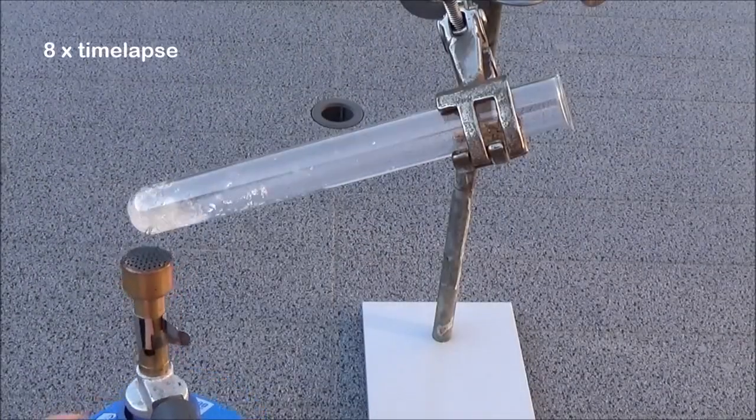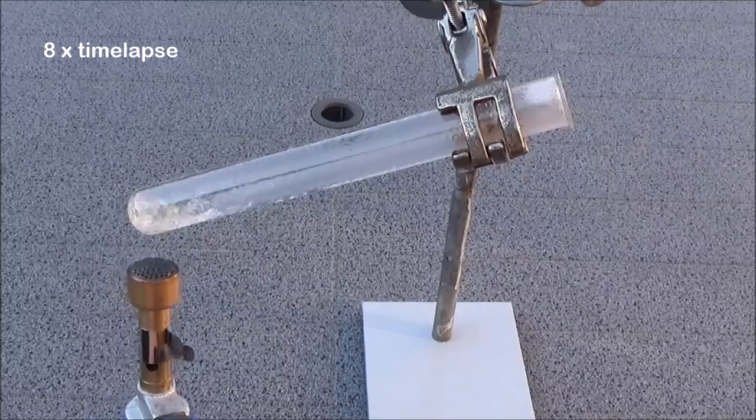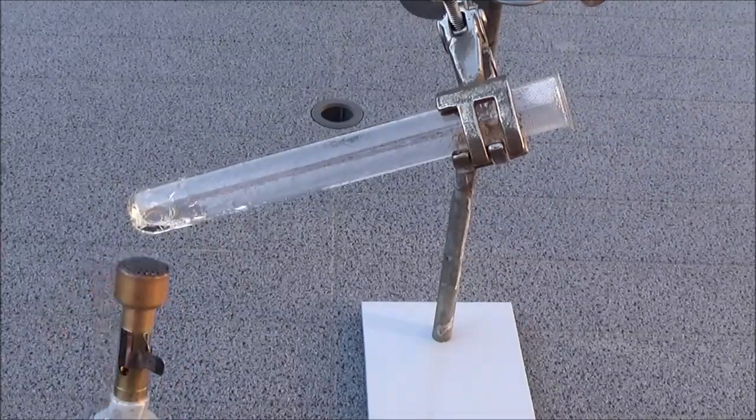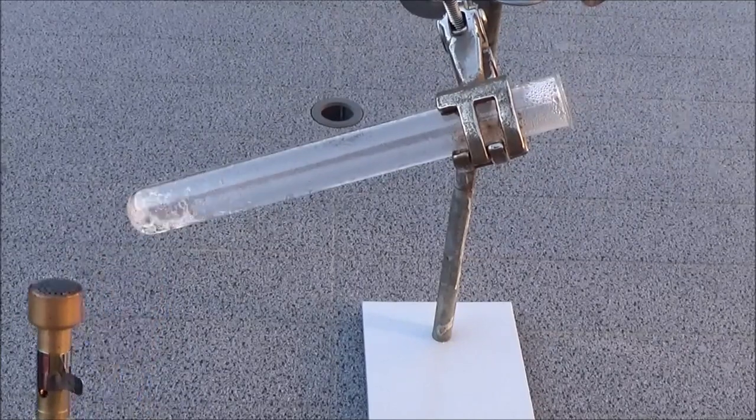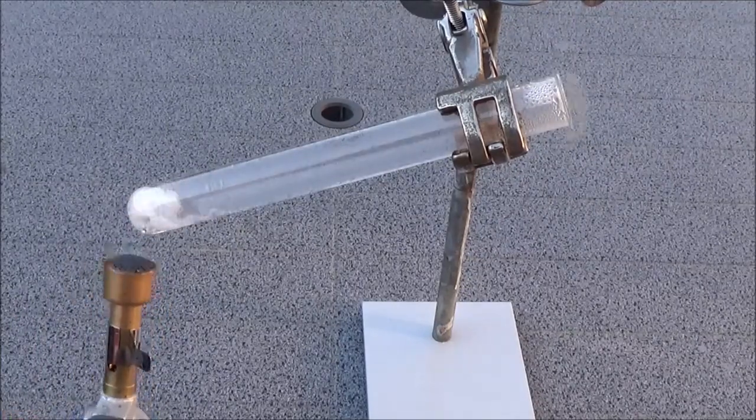The test tube is clamped at an angle in a stand clamp and heated with a gas burner. Crystal water initially escapes and a clear colorless melt is formed. After a while this turns greenish, foams and develops a lot of pungent smelling gas.